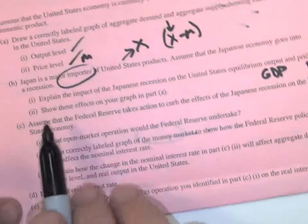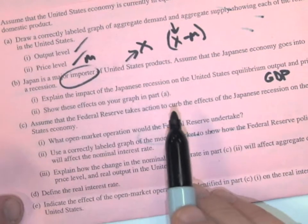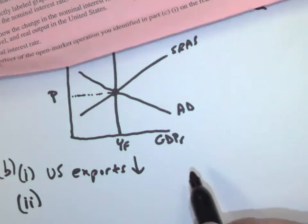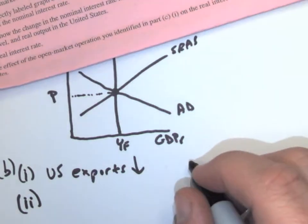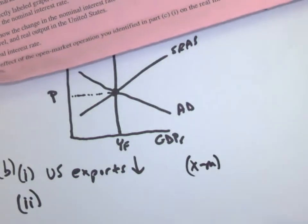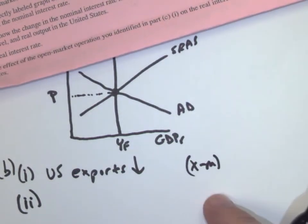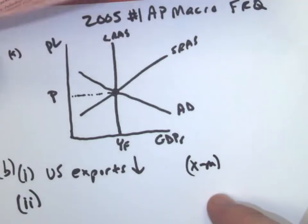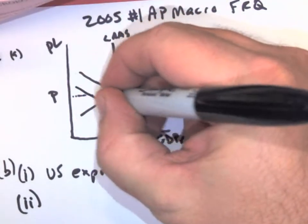Now, the second part, they say show these effects on your graph in part A. So how do I show exports falling? So remember I have my X minus M, so that's part of SIGX, right? So if our exports are falling, exports are part of aggregate demand. Okay, you would want to think it's supply, but it's not because it's part of SIGX. So aggregate demand is going to decrease.